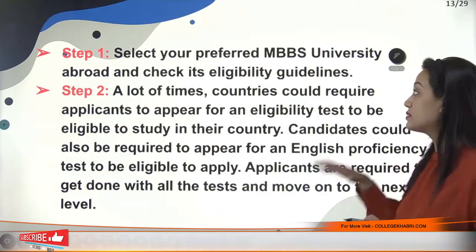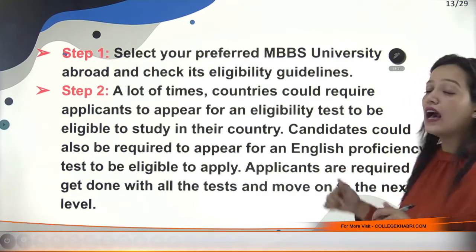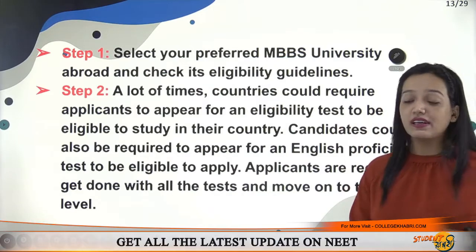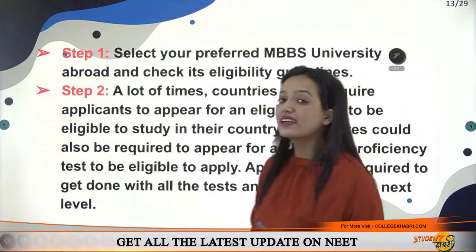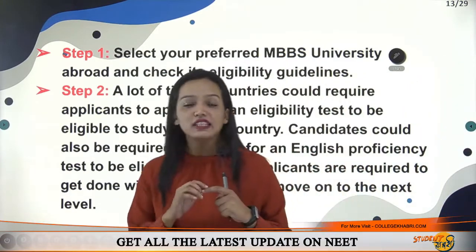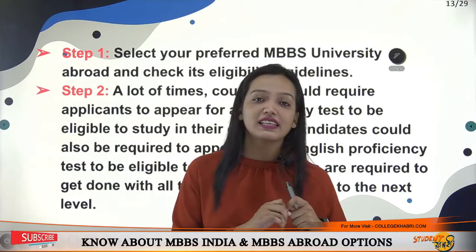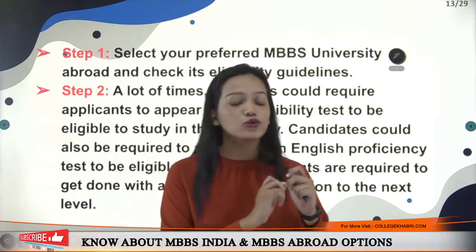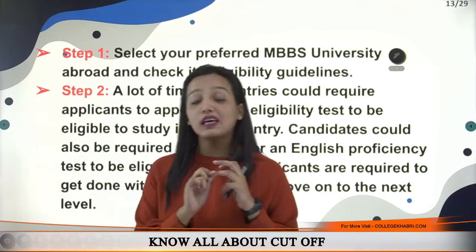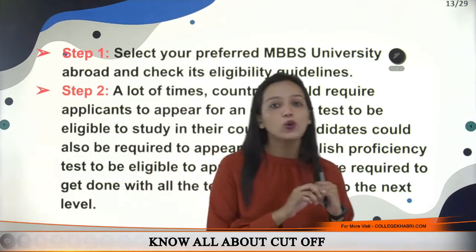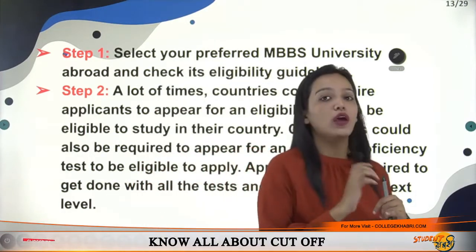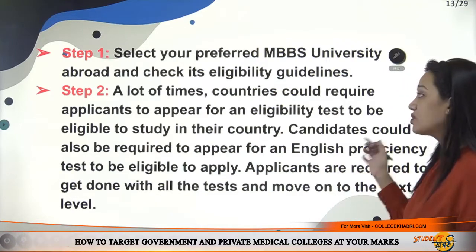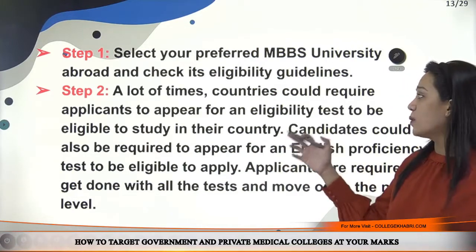So what is the admission process? First, you need to check the university or country's eligibility criteria. You need a minimum 50% in your 12th, minimum age of 17 years, and NEET qualification is absolutely must. Some countries require applicants to appear for an additional eligibility test to be eligible to study there.